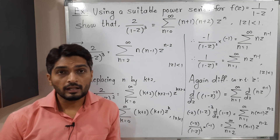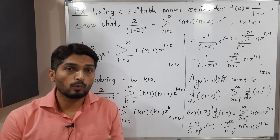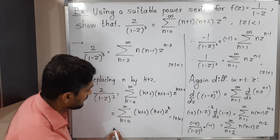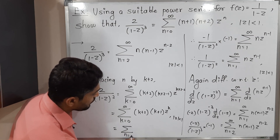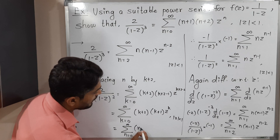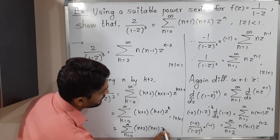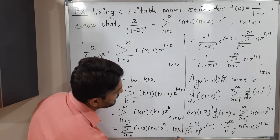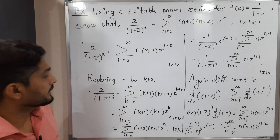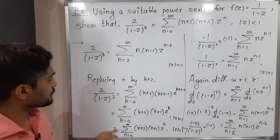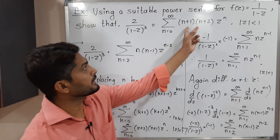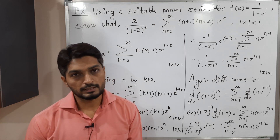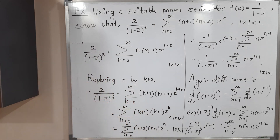Since k is simply a dummy variable, we can replace k by n. So we get 2/(1-z)³ = Σ(n=0 to ∞) (n+2)(n+1)·z^n, with condition |z| < 1. In this way we have proved that the power series expansion of this function is exactly as required — we just need to interchange the brackets to write (n+1) first and then (n+2). This is the required power series expansion. Thank you.